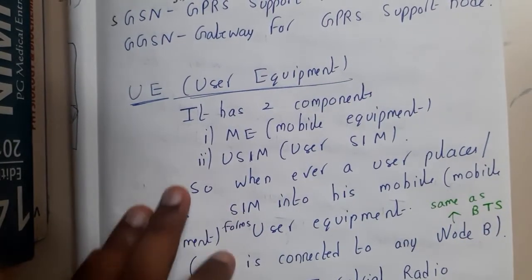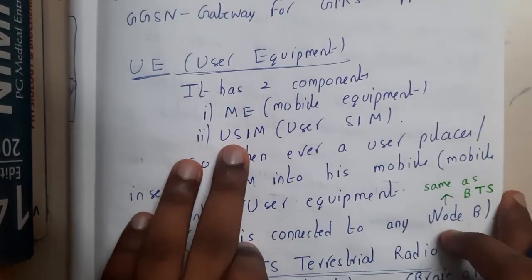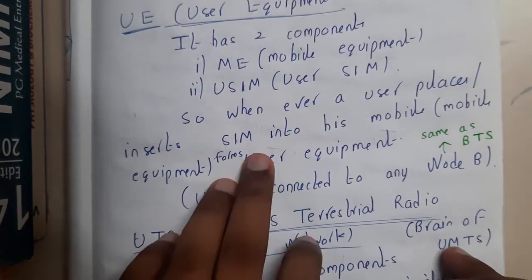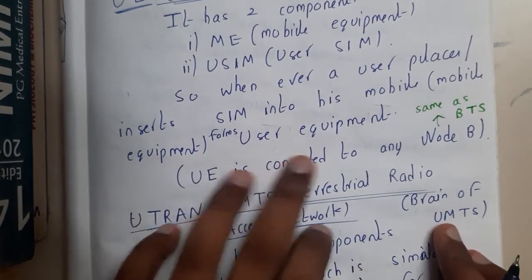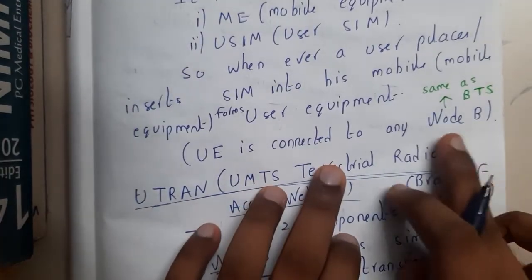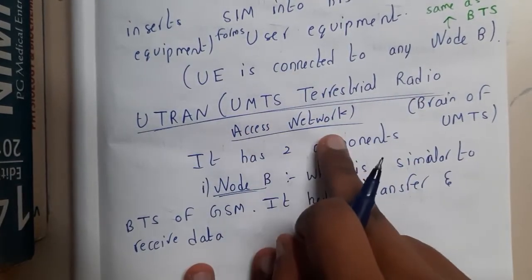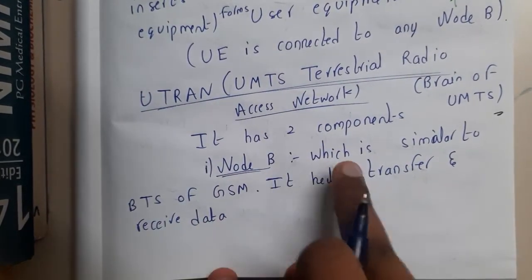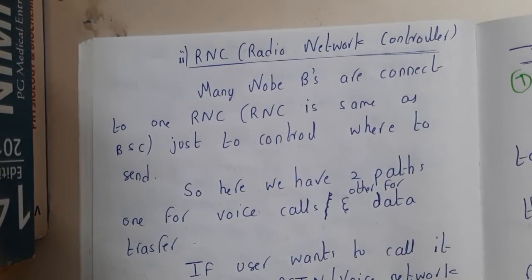UE is the User Equipment. It has two components: ME — Mobile Equipment — and USIM — User SIM. Whenever a user inserts a SIM into a mobile phone, it forms the User Equipment. UE is connected to Node B, which is almost the same as a BTS. UTRAN, the UMTS Terrestrial Radio Access Network, is the brain of UMTS.